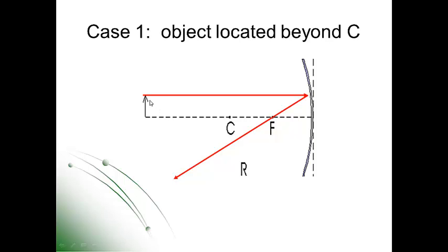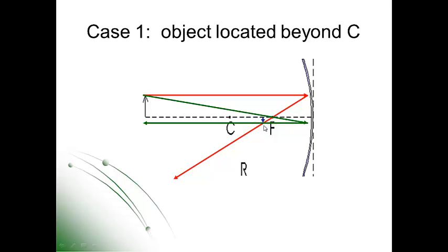Ray number two starts at the top of the object, travels through the focal point, and then reflects parallel to the principal axis. Ray one is drawn in red and ray two is drawn in green. To locate the image, we're looking for where those two lines intersect. That little blue arrow that just appeared is our image location — since we started at the top of the arrow, where the reflected rays cross is the top of the image.